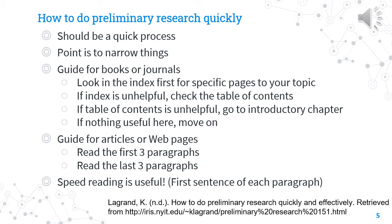Here are several guides for how to do preliminary research in various media. For books or research journals, looking in the index is the first place to go for specific pages that apply to your topic. If the index is present but unhelpful, check the table of contents, which may give you chapter or article titles that prove promising. If the table of contents is also unhelpful, quickly review the introductory chapter to get an idea of what the journal or book is discussing. If none of these are useful, you can set the source aside and consider it unhelpful for your research.